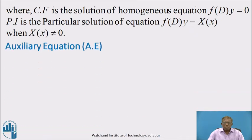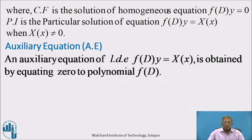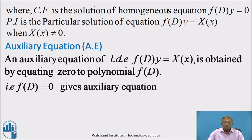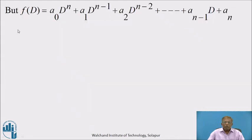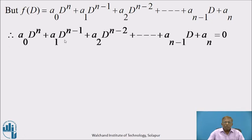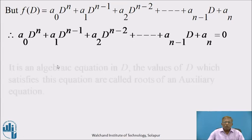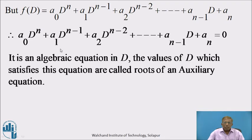Now, the auxiliary equation of a differential equation: the auxiliary equation of a linear differential equation f(D)·y equals X(x) is obtained by equating the polynomial f(D) to zero. That means f(D) equals 0 gives the auxiliary equation. For an nth order differential equation, f(D) is A₀Dⁿ plus A₁Dⁿ⁻¹ plus A₂Dⁿ⁻² plus and so on plus Aₙ₋₁D plus Aₙ, and setting it equal to zero gives the auxiliary equation. It is an algebraic equation in D, and the values of D which satisfy this equation are called the roots of the auxiliary equation.